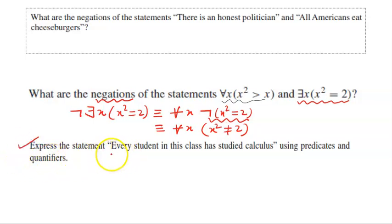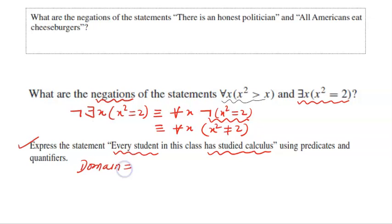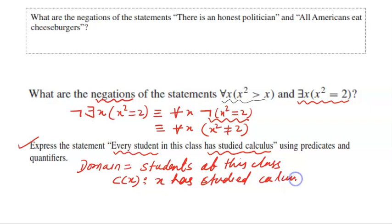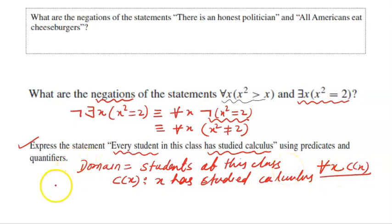The next question: express 'every student in this class has studied calculus.' First I have to define the domain, because specifying the domain in the beginning is very important. Suppose the domain is the students of this class. I define the propositional function C(x): x has studied calculus. The translation using predicate and quantifier is: for all x, C(x).